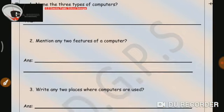Question number 2 is, mention any 2 features of a computer. Dear children, we have read many features of a computer. So, you can write any 2 features among those. Like, computer never makes mistakes. Number 2, computer works very fast. So, you can write any 2 features as per your own choice.